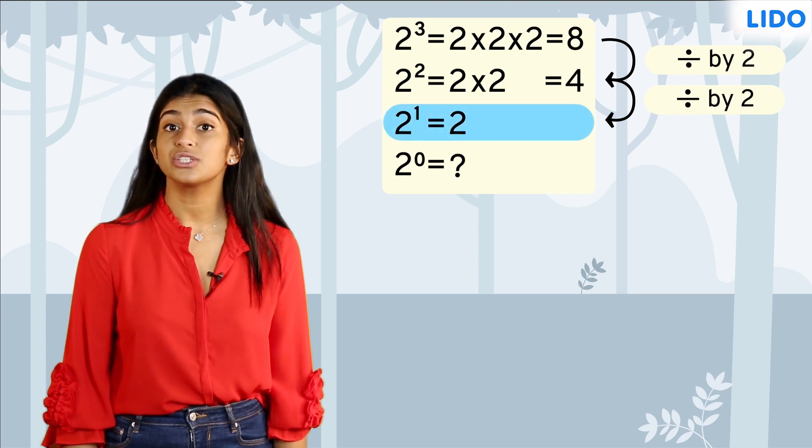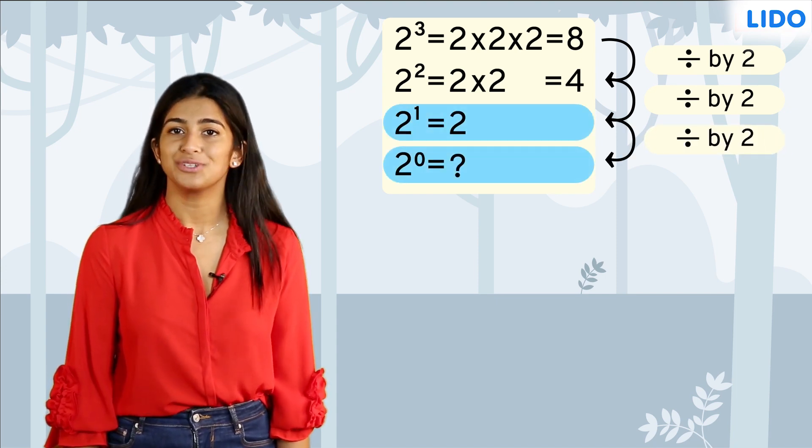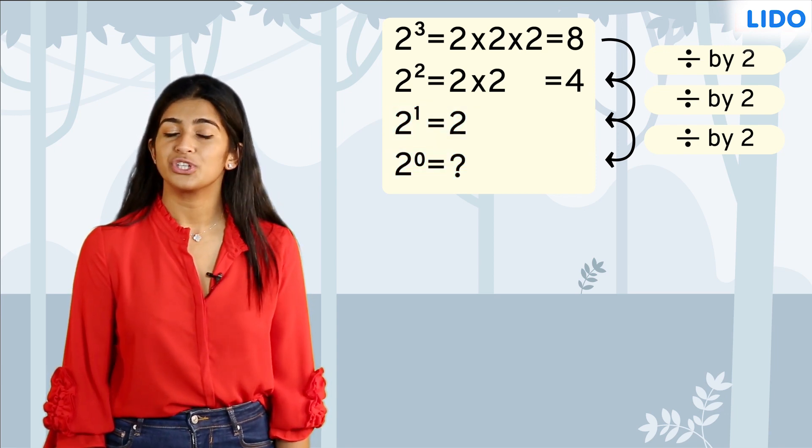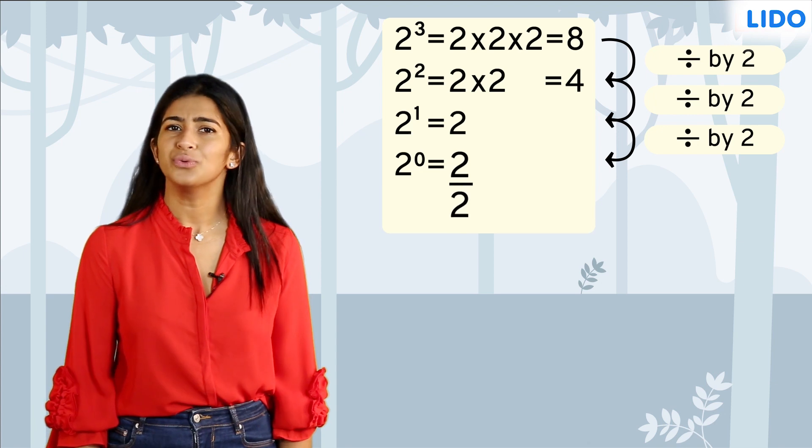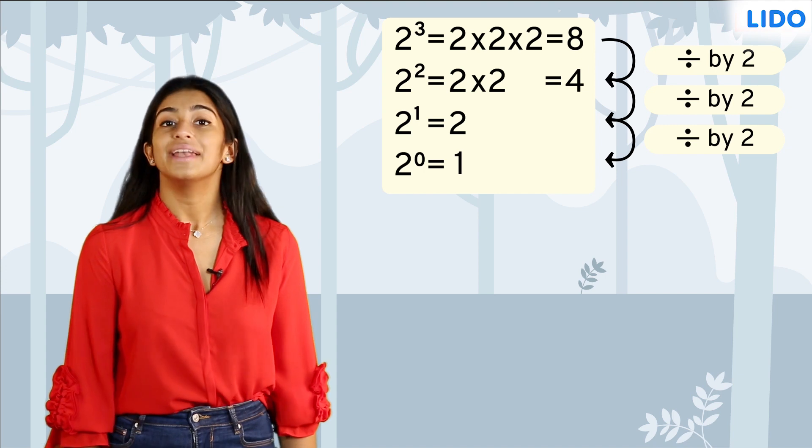So to go from 2 raised to 1 to 2 raised to 0, we will divide by 2. Let's do that. If we divide 2 raised to 1, which is just 2, by 2, we get 1. This makes 2 raised to 0 equal to 1.